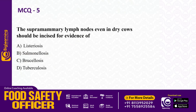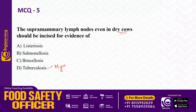Next question: the supramammary lymph nodes, even in dry cows, should be incised for evidence of — listeriosis, salmonellosis, brucellosis, or tuberculosis. The supramammary lymph nodes are particularly incised and examined. The answer is tuberculosis — specifically Mycobacterium bovis.